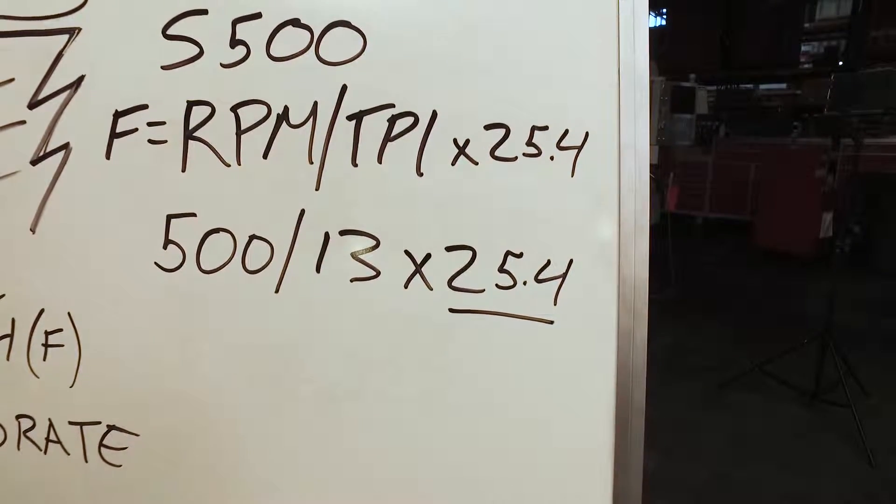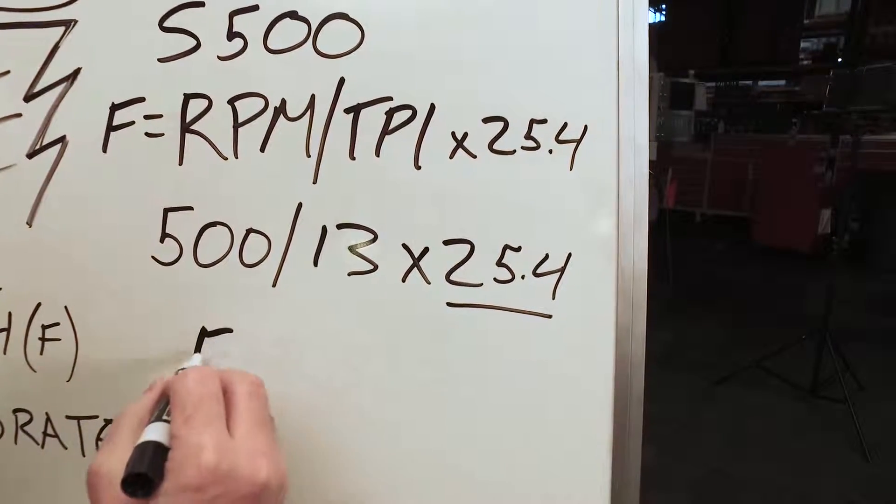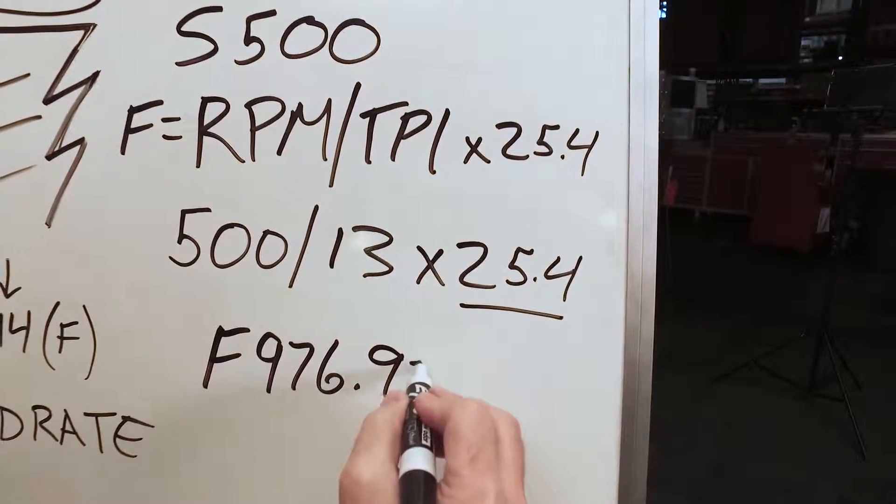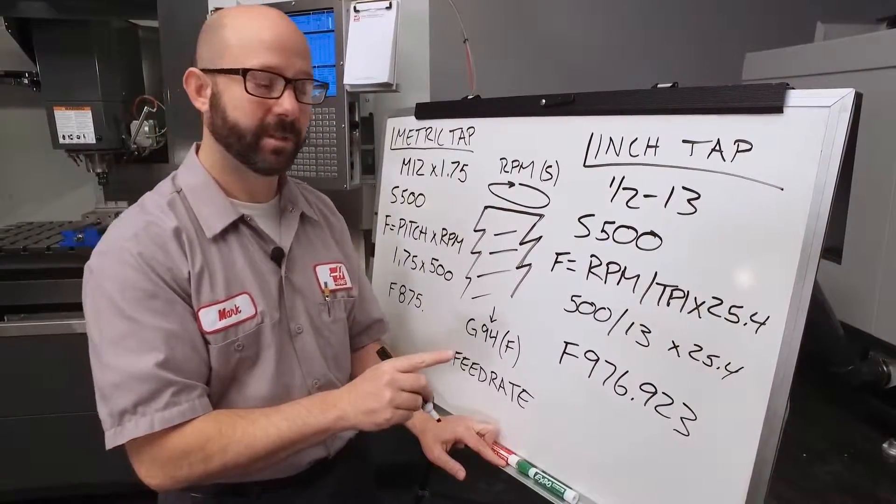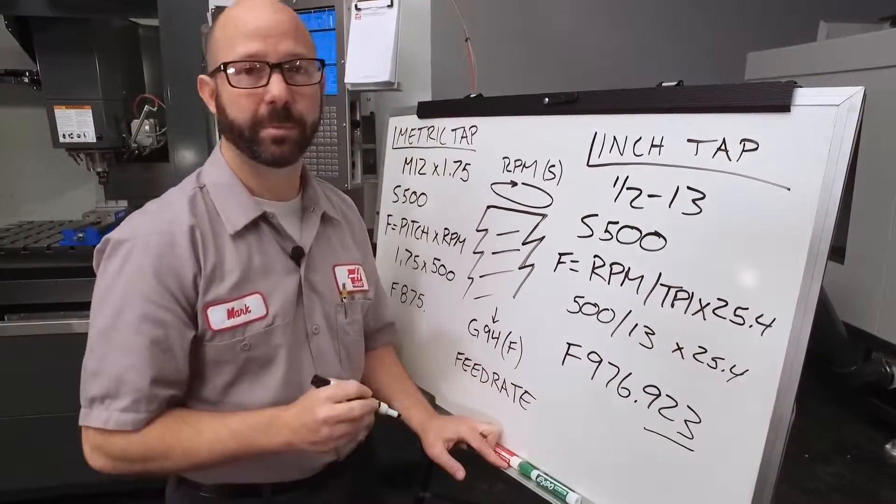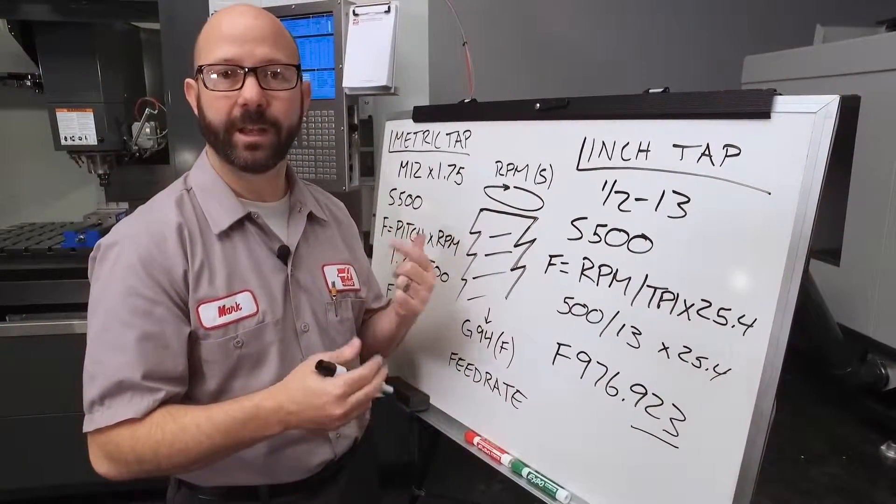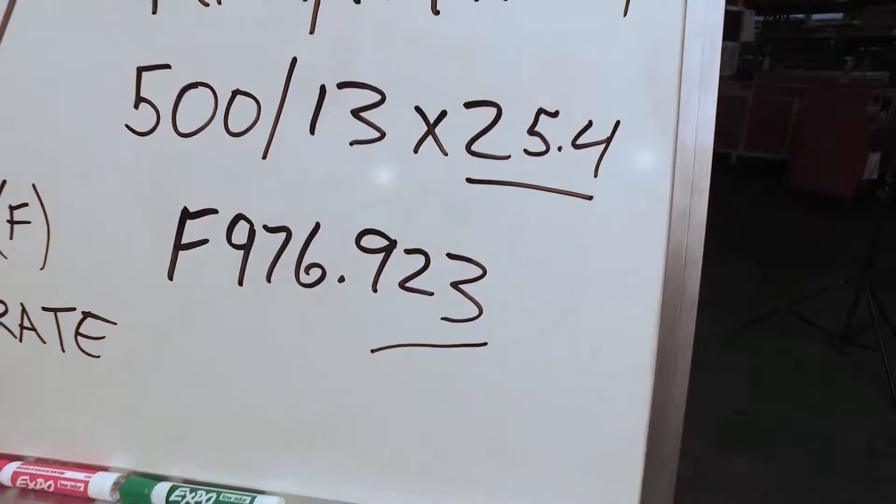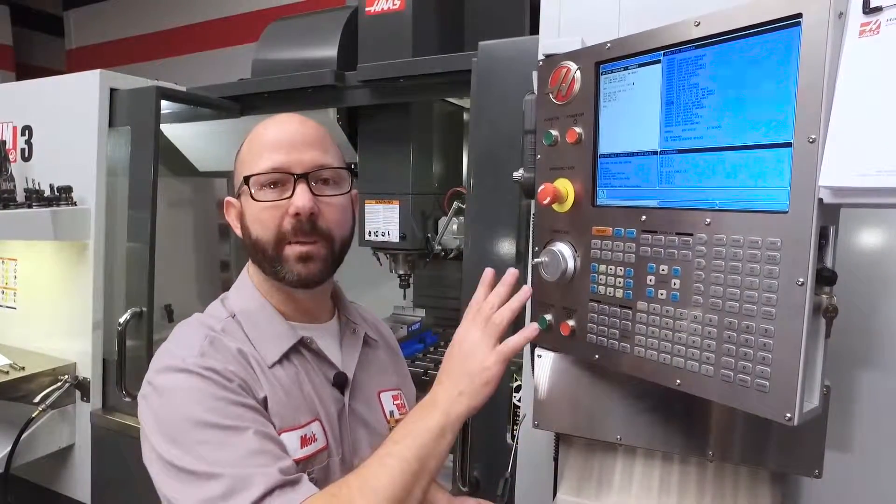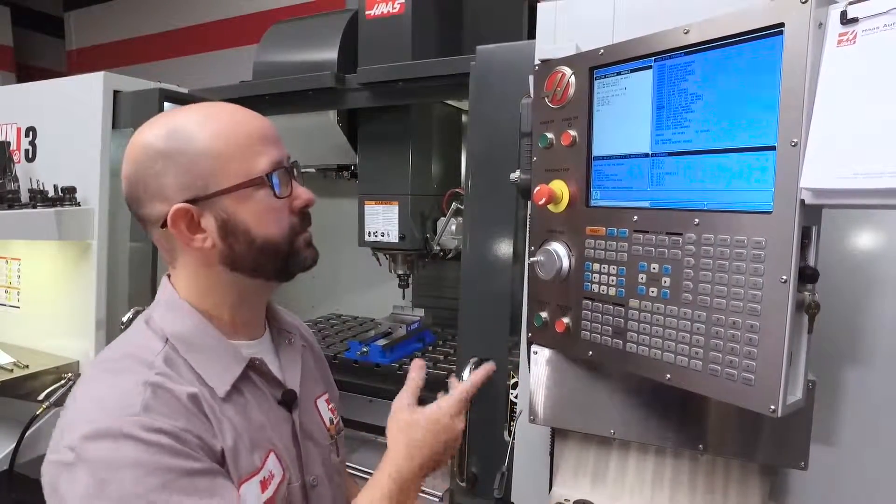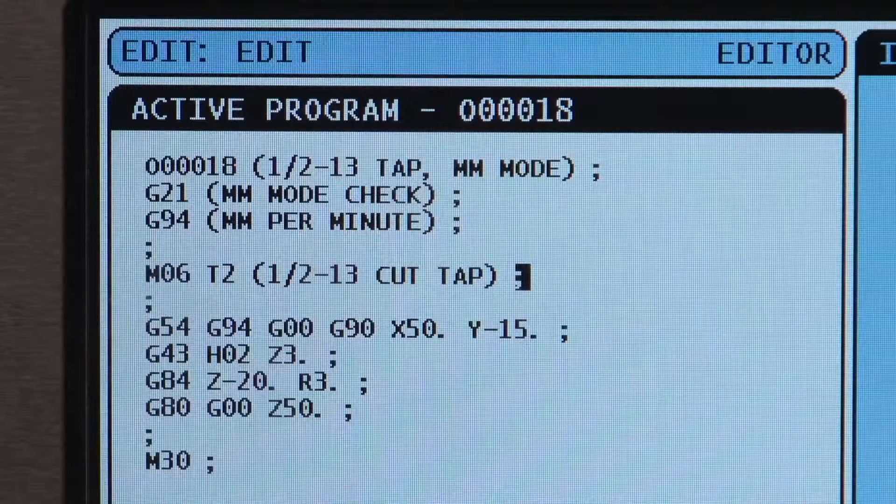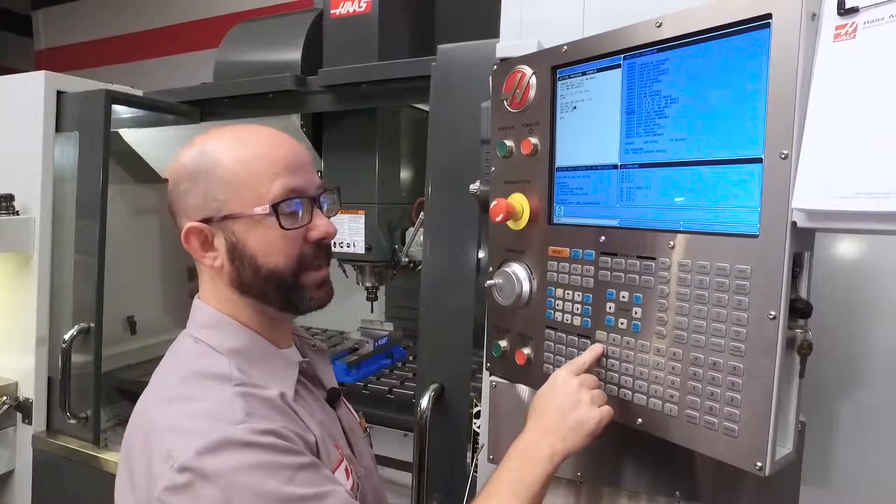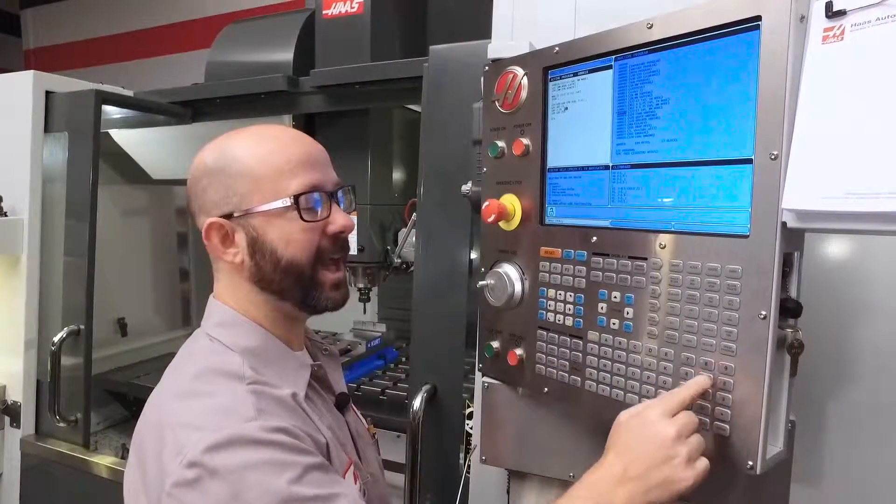Now when we run this through a calculator, we get a millimeter per minute feed rate of 976.923 millimeters. This is important. We rounded our number out to three decimal places because our machine can handle up to three decimal places. The further out we carry that number, the more accurate our threads are. Now this is my program for a half 13 tap in millimeter mode. I'm going to enter my RPM as S500 and my feed rate as F976.923.